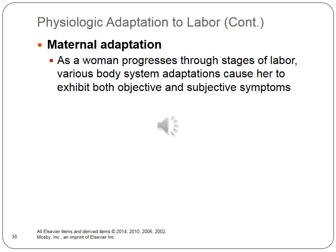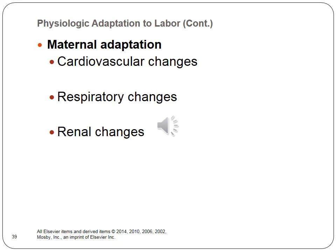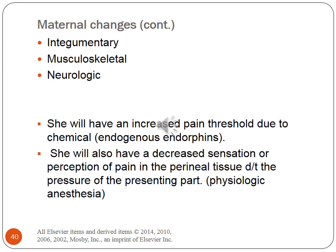Maternal adaptation: as a woman progresses through the stages of labor, various body system adaptations cause both objective and subjective symptoms. Cardiovascular changes: cardiac output increases by 51% by the end of the first stage of labor; blood pressure increases with contractions. Respiratory changes: increased respiratory rate; in the second stage of labor, oxygen consumption can double. Renal changes: proteinuria of 1+ can occur in response to the breakdown of muscle tissue from laboring. Integumentary changes include distensibility or stretching in the vaginal introitus area. Musculoskeletal: joint aches, fatigue, and backaches. The laboring woman may have increased temperature due to increased activity. Neurologic changes: the laboring woman will exhibit behavioral changes with each stage of labor, including elation and fatigue. She will also have an increased pain threshold due to chemical endorphins released, and decreased perception of pain in the perineal tissues due to pressure from the presenting part.